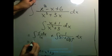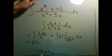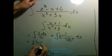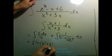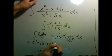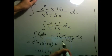Well, this piece is 1 half natural log absolute value of u. u in this case is this positive thing. So I don't need absolute values.